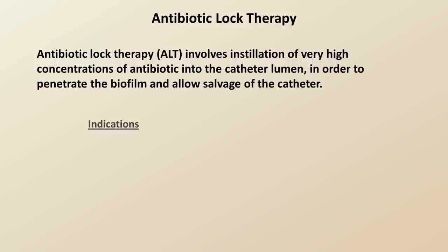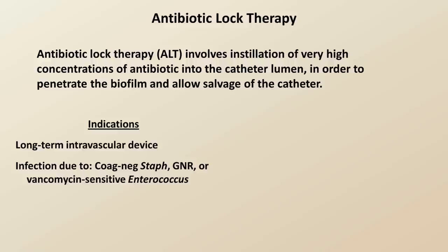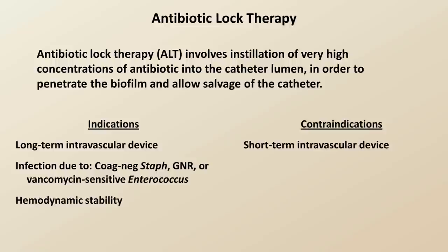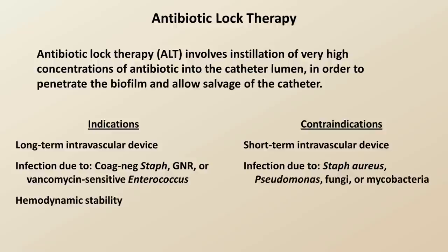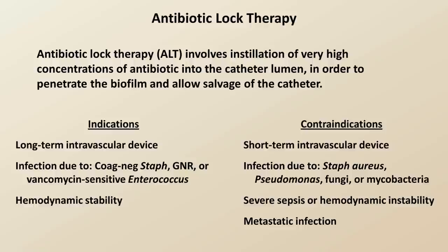Indications for antibiotic lock therapy are: the presence of a long-term intravascular device; infection due to either coagulase-negative staph, a non-pseudomonal gram-negative rod, or vancomycin-sensitive enterococcus; and hemodynamic stability. Contraindications are: a short-term intravascular device such as a routine triple-lumen central line (which should just be removed); infection due to Staph aureus, Pseudomonas, fungi, or mycobacteria; severe sepsis and/or hemodynamic instability; metastatic infection such as endocarditis or a distant abscess; or an extraluminal catheter infection such as a pericatheter abscess.